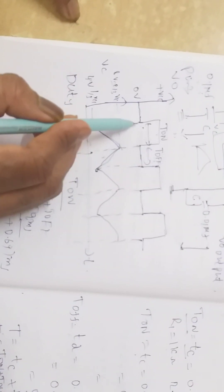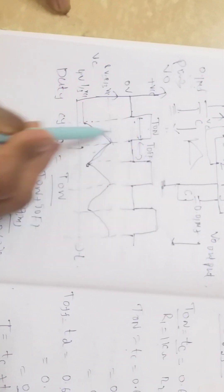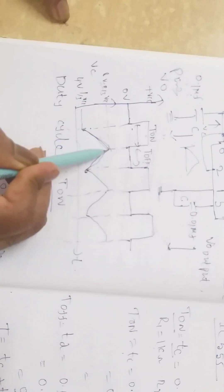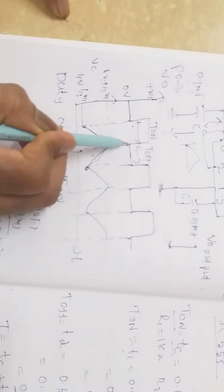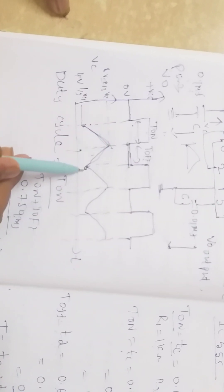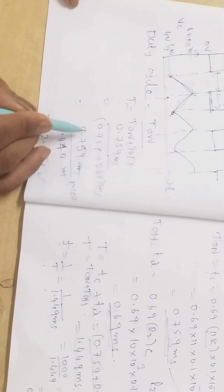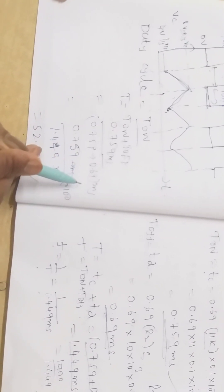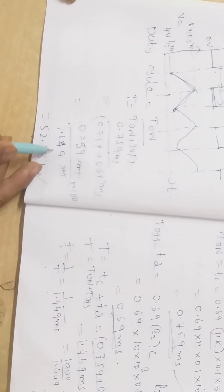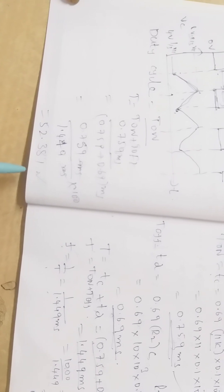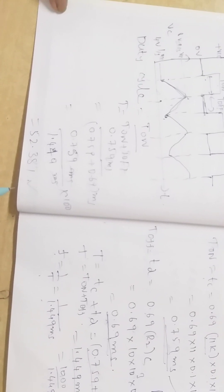Whenever the square wave is at high condition, the capacitor charges from one-third Vcc to two-thirds Vcc. The duty cycle equals T_on divided by (T_on + T_off). T_on is 0.759 milliseconds and T_off is 0.69 milliseconds, giving a total T of 1.449 milliseconds. Finally, the duty cycle is 52.38 percent.